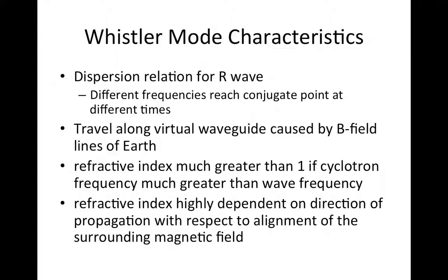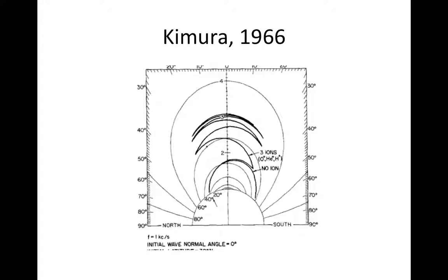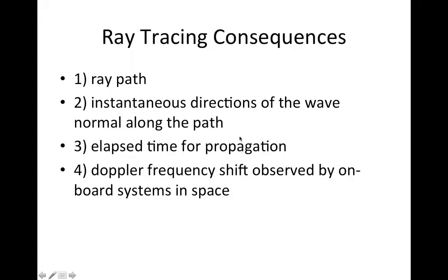These are some consequences that came about from Kimoro's research. Here's an actual graph of the trajectory of a path, and ray tracing techniques were used to consider all four of these results. From this, a lot of information can be found.